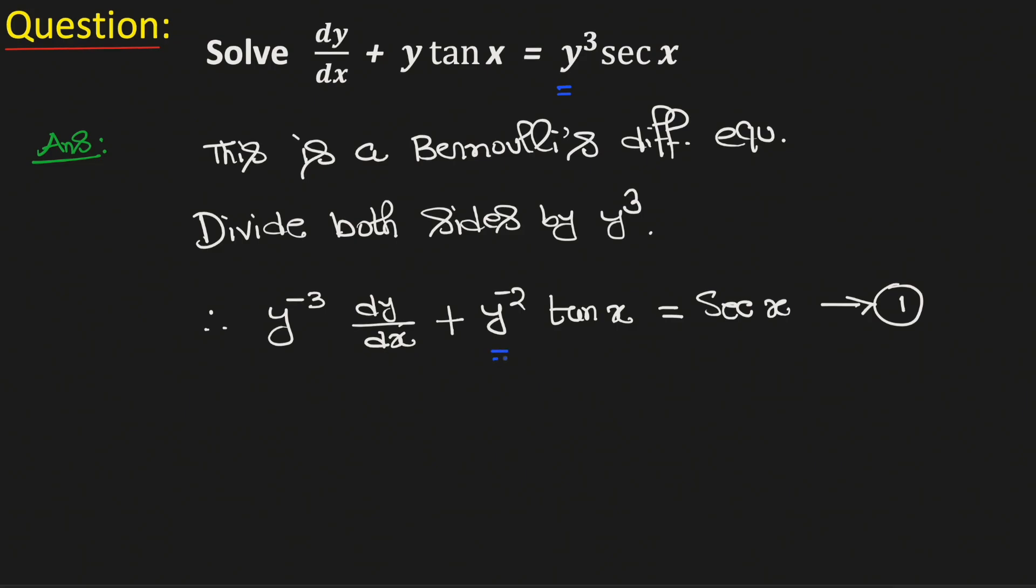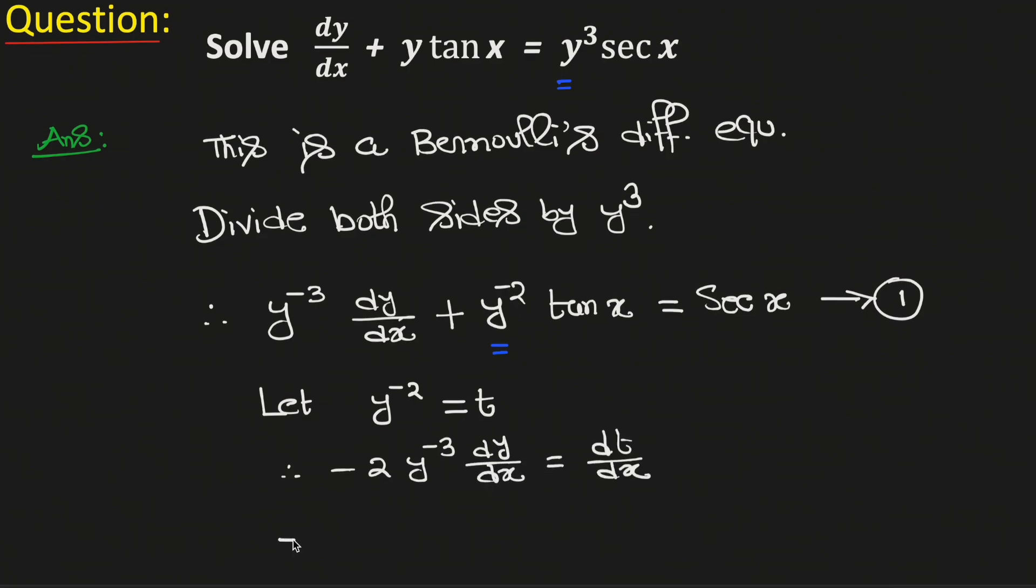In the next step we will substitute this value as t. So let's assume that y to the power minus 2 equals t. Differentiating both sides with respect to x we get that minus 2 y to the power minus 3 dy/dx equals dt/dx. From here we get that y to the power minus 3 dy/dx equals minus half dt/dx.